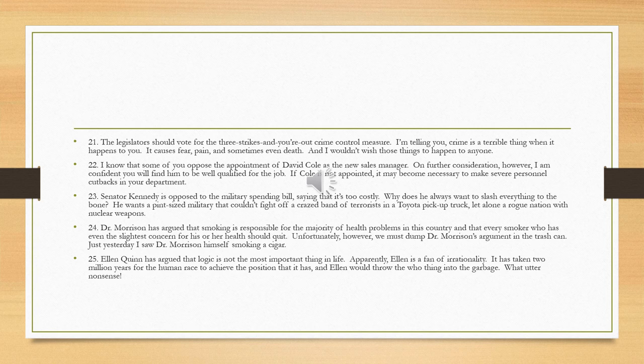Number 21 is an example of a red herring. Legislators are asked to advocate and vote for a three-strikes crime control measure, and then we start talking about the personal experience of crime and how terrible it is when it happens to you. That may be true, but it's not a reason for supporting a law — it takes us onto a completely different topic. Number 22 is an appeal to force: you should support this person as new sales manager because if not, you might get laid off. That's not a logical reason to support the person, but it has psychological force and will probably work because we don't want to experience the harm imposed by that threat.